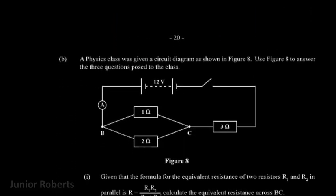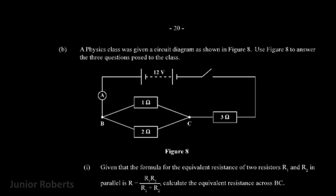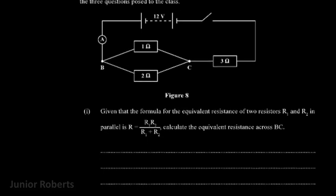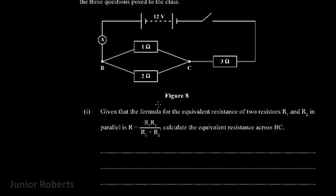Part b says a physics class was given a circuit diagram as shown in figure eight. Part i gives us the formula for the equivalent resistance of two resistors R1 and R2 in parallel: R_eq = (R1 × R2) / (R1 + R2). They want us to calculate the equivalent resistance across BC, which is the parallel branch shown in the circuit.